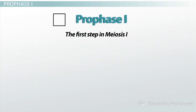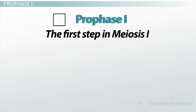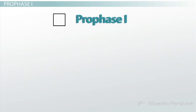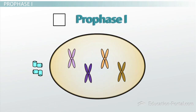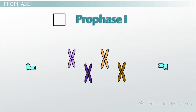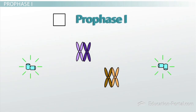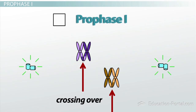Prophase one is the first step in meiosis one, and a lot happens during this step, some of which is a departure from what we saw in mitosis. During prophase one, the chromatin condenses. The centrosomes move to opposite poles and begin to produce spindle fibers. Homologous chromosomes search for their partner homolog in a process known as pairing. Crossing over occurs between homologous chromosomes.